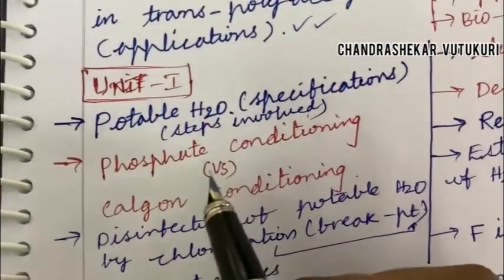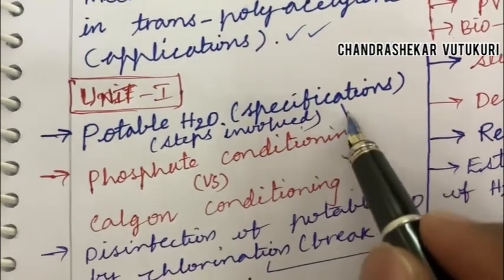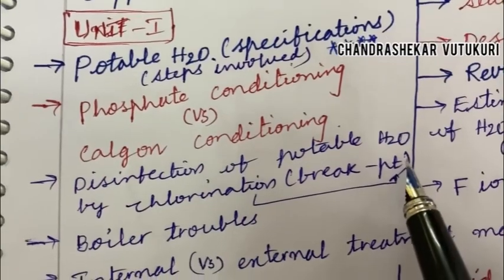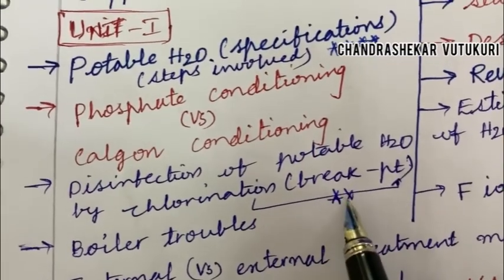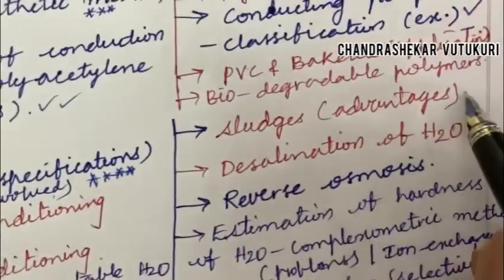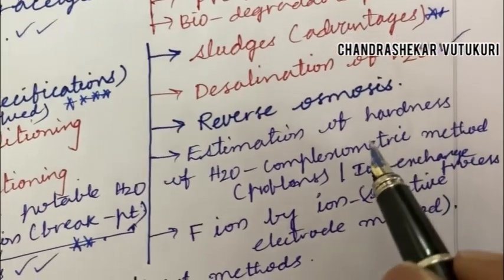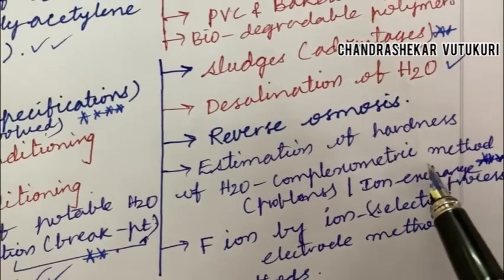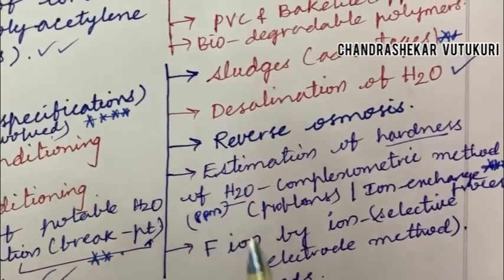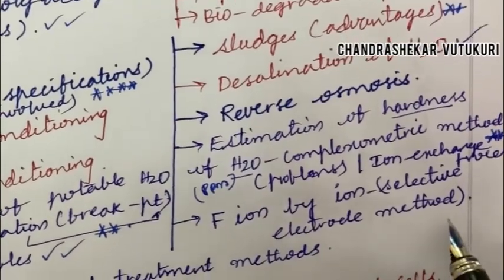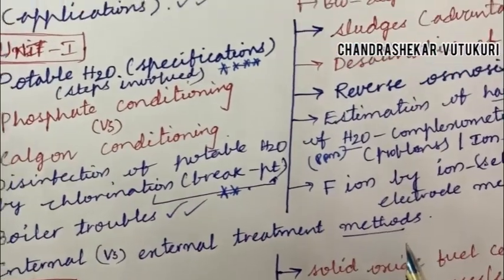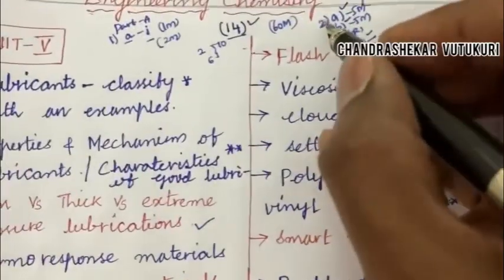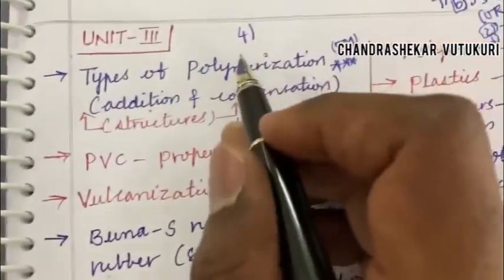Jumping into Unit 1 — it is very easy. It is all about portable water specifications and the steps involved, which may be the topmost question this time. Phosphate conditioning versus Calgon conditioning, and disinfection of portable water by chlorination and the breakpoint chlorination, may be a topmost question. Boiler troubles may be a short question, and sludges and their advantages, desalination of water, reverse osmosis, estimation of hardness of water, complexometric method, and problems on ion exchange process may also be important questions. Problems related to hardness of water to find the PPM is also said to be a topmost short question. Estimation by ion-selective electrode method is said to be a topmost question. Internal versus external treatment methods is also one of the very important questions. This is said to be question 2AB or 3AB — I should note Unit 5 question is question number 6, Unit 4 is question number 5, Unit 3 is question number 4, and Unit 1 is question number 2.